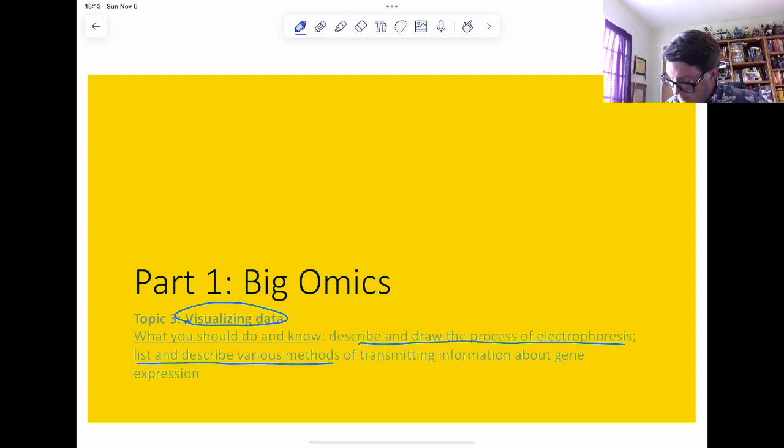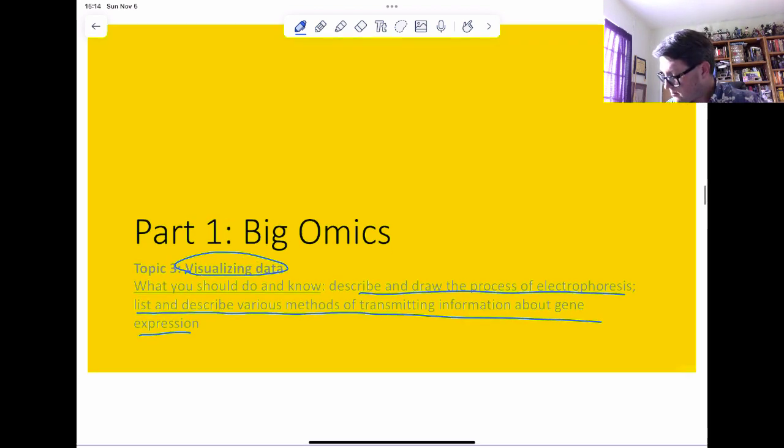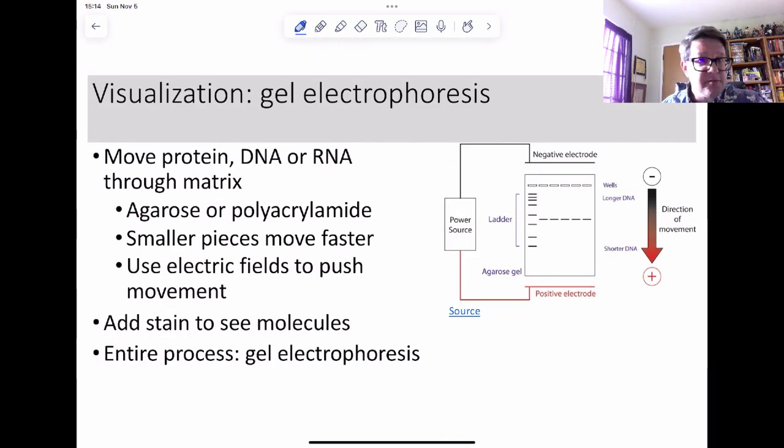You shall also be able to list and describe various methods of transmitting information about gene expression. The most basic of all the techniques that we have in molecular biology is gel electrophoresis. It's going to be used for everything. The basic idea is to take the molecule I care about, which is either protein, DNA, or RNA, and run it through a matrix. Matrix is a nice way of saying I'm going to run it through a maze, and the maze is going to be made out of either a sugar called agarose or a polymer called polyacrylamide.